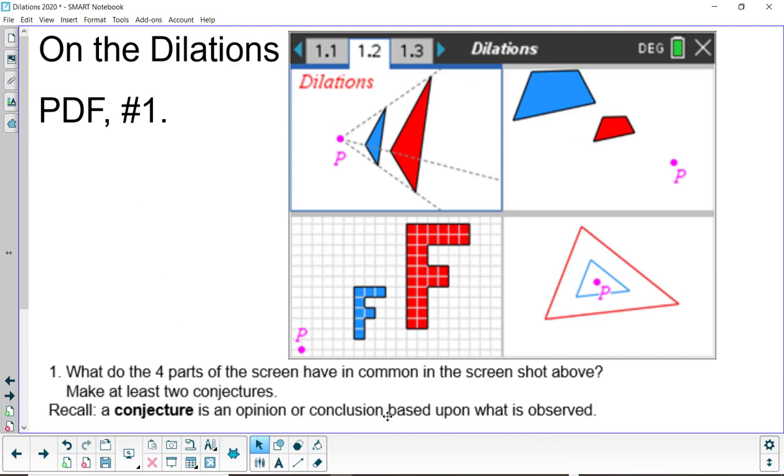Recall that a conjecture is an opinion or conclusion based upon what is observed. So number one says look at this screenshot and what do those four parts of the screen have in common. Please make at least two conjectures. Press pause and resume when you're ready.